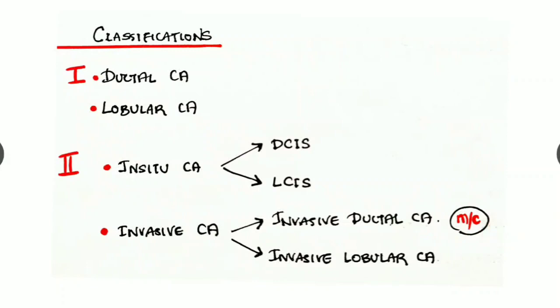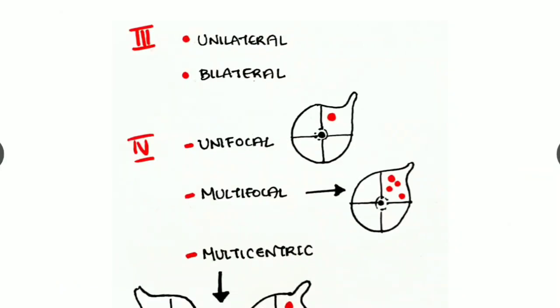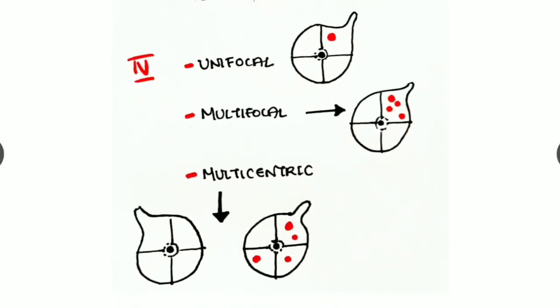Thirdly, we can classify it into unilateral and bilateral. Next, we can classify it into unifocal, multifocal, and multicentric. In unifocal there is a single lesion. In multifocal there are many lesions but all are located in the same quadrant of the breast. Whereas in multicentric there are many lesions located at different quadrants but in the same breast.